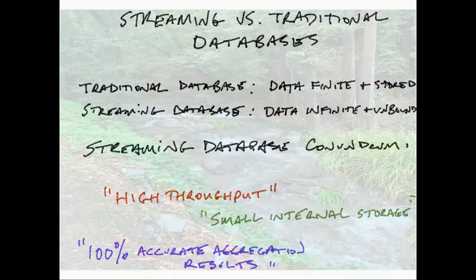Data stream versus data lake. We use these terms a lot. Someone got a big to-do about water-based analogies. Data lake is like a long-term residency hotel, like Hotel California or the Roach Motel, where the data checks in and it never checks out. That's a permanent long-term store. Data stream is transient data, just passing through, very much in the moment. It's all about insight into the here and now. Traditional database: data is finite and stored, has permanent endurance. Streaming database: data is infinite because it keeps on going along, unbounded. There's a conundrum - you have high throughput, small internal storage, 100% accurate aggregation results. You get to pick two of the three.